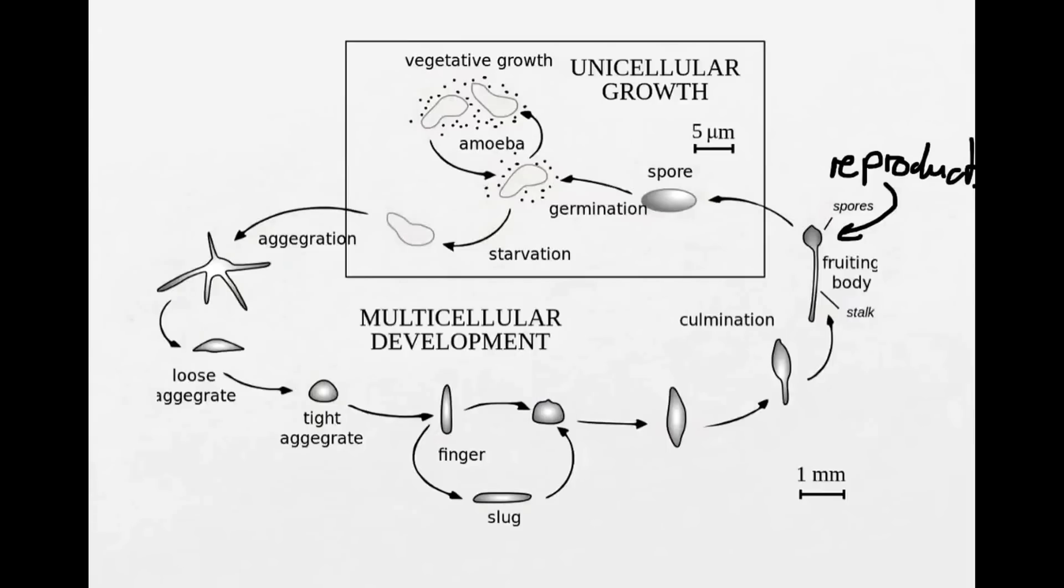Only the chosen few form the spores. The rest of these amoeba that form this incredible fruiting body will all die. But only these spores are allowed to be released again, and they can start a new cycle.